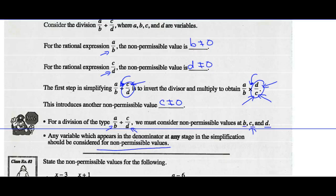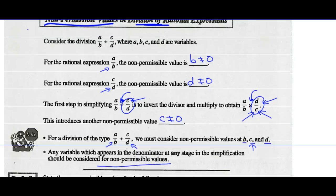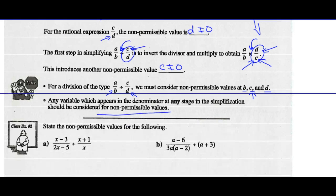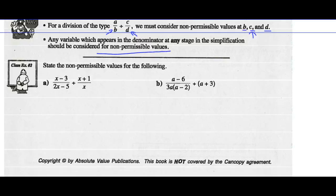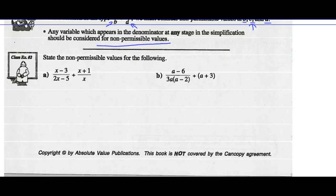That means three of these four positions end up being denominators. B and D are already denominators, and C will become a denominator when I change division to multiplication. So we've got to make sure we look into all those spots when we talk about non-permissible values.